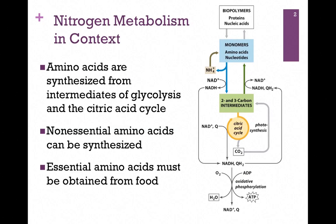Most amino acids are synthesized from intermediates of glycolysis and the citric acid cycle. In our figure here, we're starting with 2 and 3 carbon intermediates of glycolysis and the citric acid cycle, and we're going to use those to build amino acids. This would be an anabolic pathway.